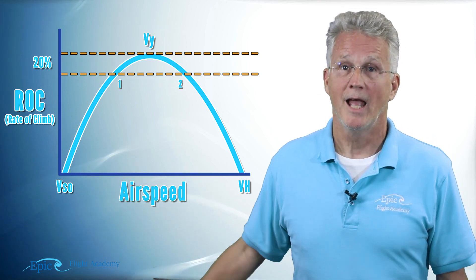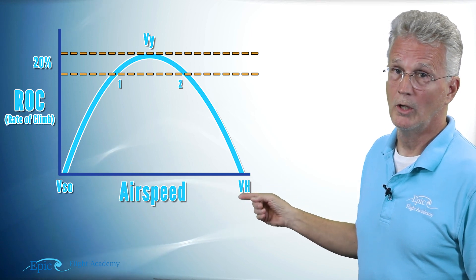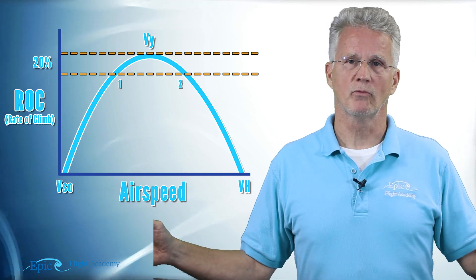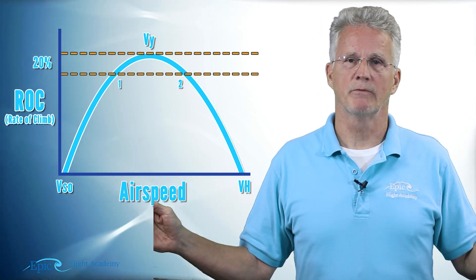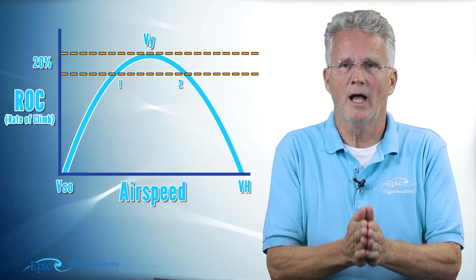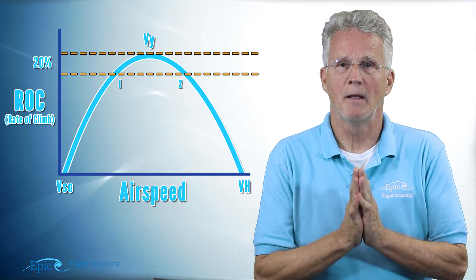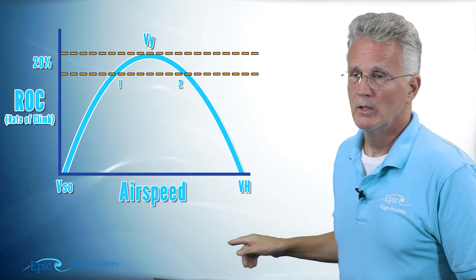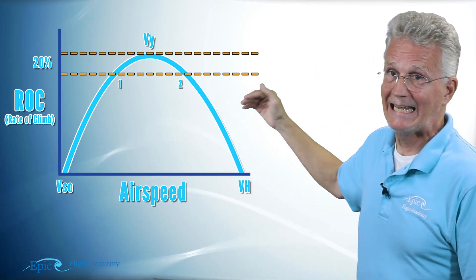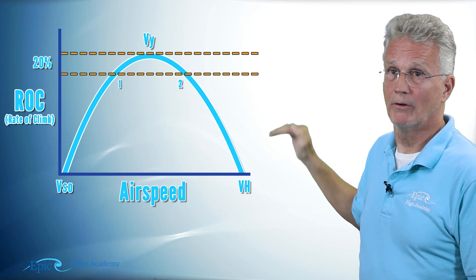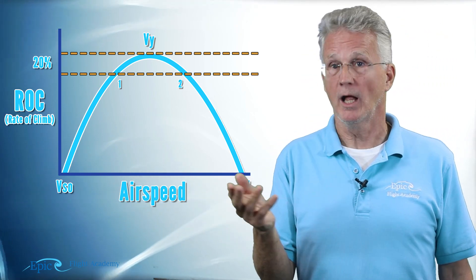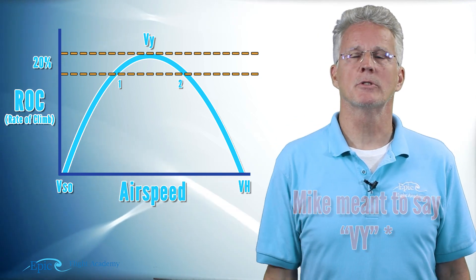Somewhere between my VSO of 40 knots and my VH of 126 is a speed of 74 knots at sea level—that'll be my maximum rate of climb. Let's go straight up and sure enough, at the peak of this arc, you see I cannot get a higher rate of climb. That is by definition my maximum rate of climb, that's VY.